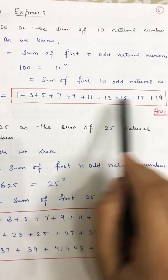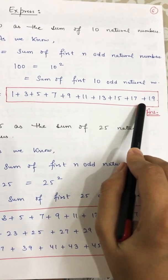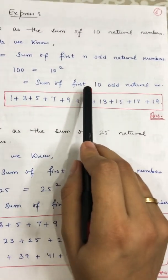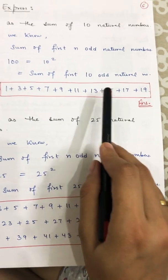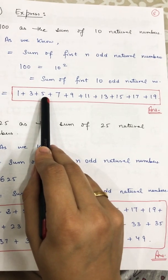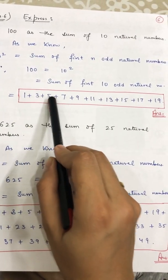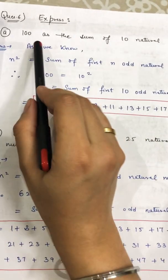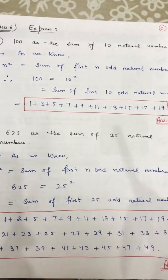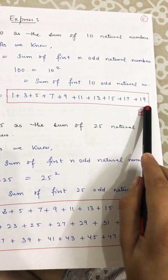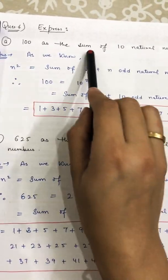The series is all odd natural numbers in ascending order — first ten of them: 1 + 3 + 5 + 7 + 9 + 11 + 13 + 15 + 17 + 19. There are ten numbers here (count 1 through 10). If you add all these numbers the answer will be 100. So this is how you express 100 as the sum of the first ten odd natural numbers — this is part a.